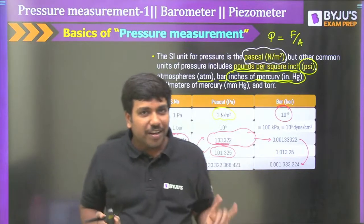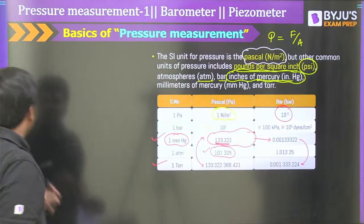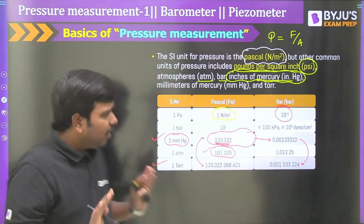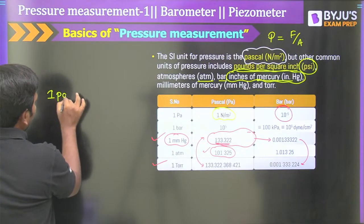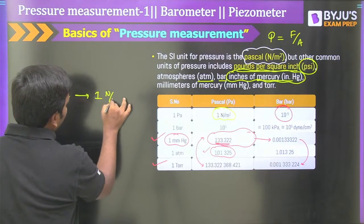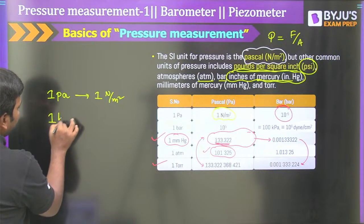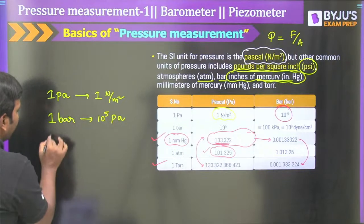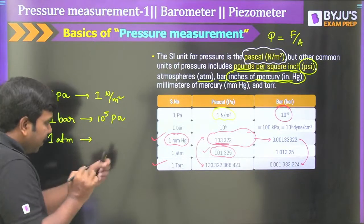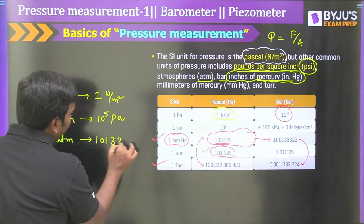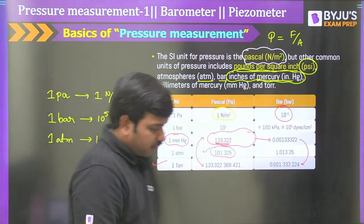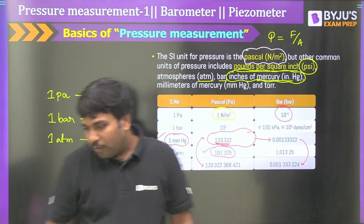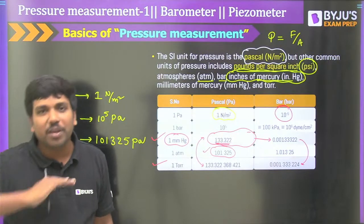To summarize: one Pascal equals one Newton per meter squared. One bar equals 10 to the power 5 Pascals. One atm equals 101,325 Pascals. These are three important relations between units in our regular sessions. Without any second thought, let's move one step further.